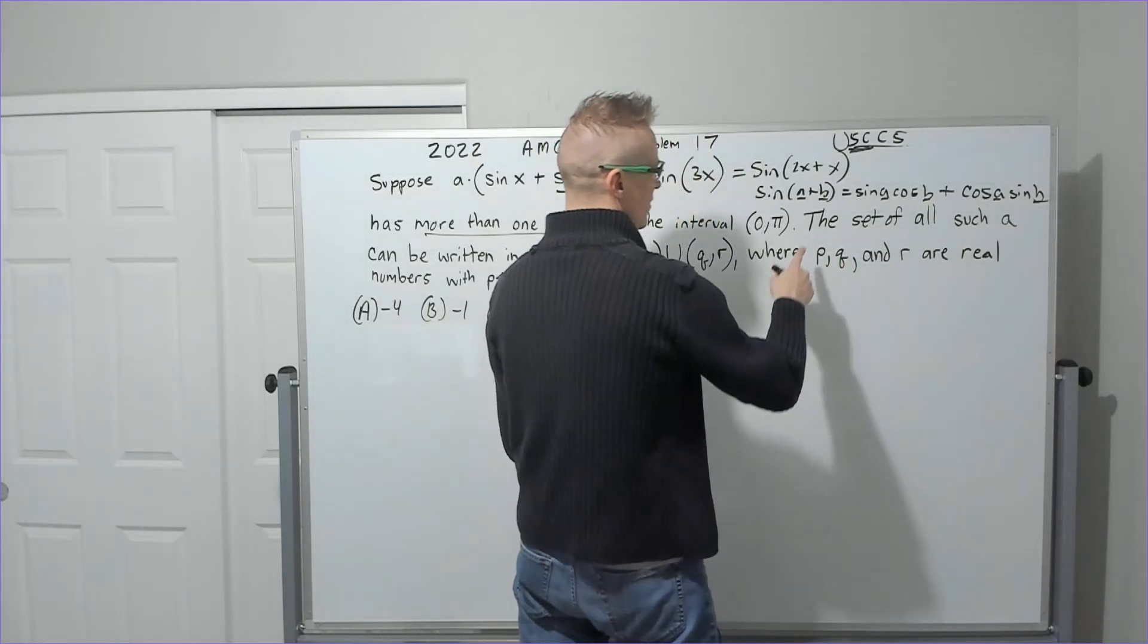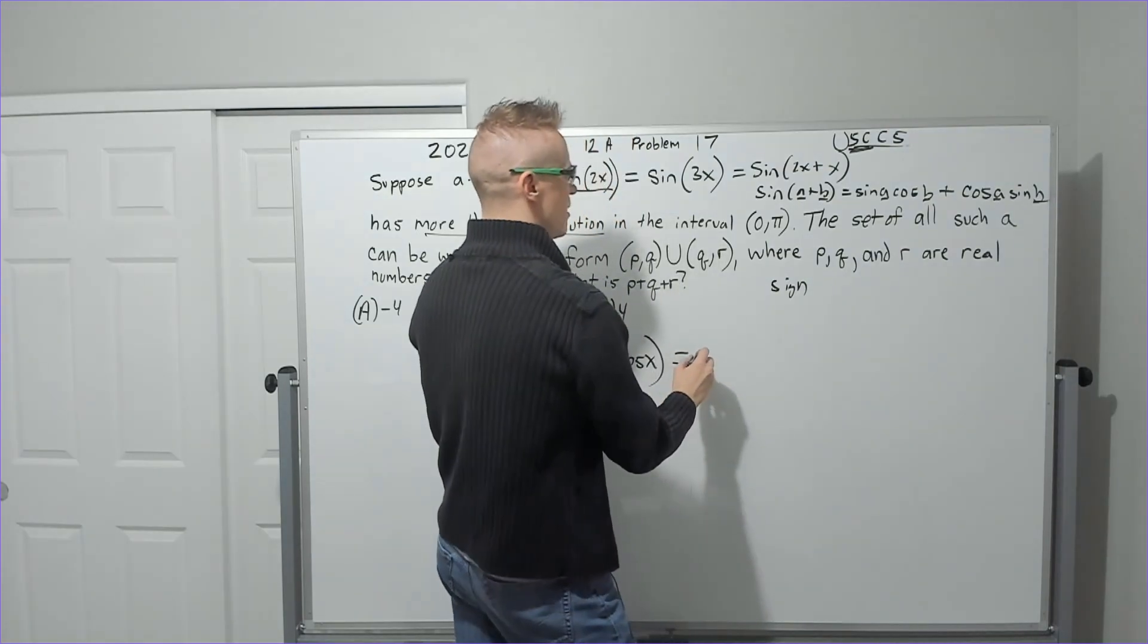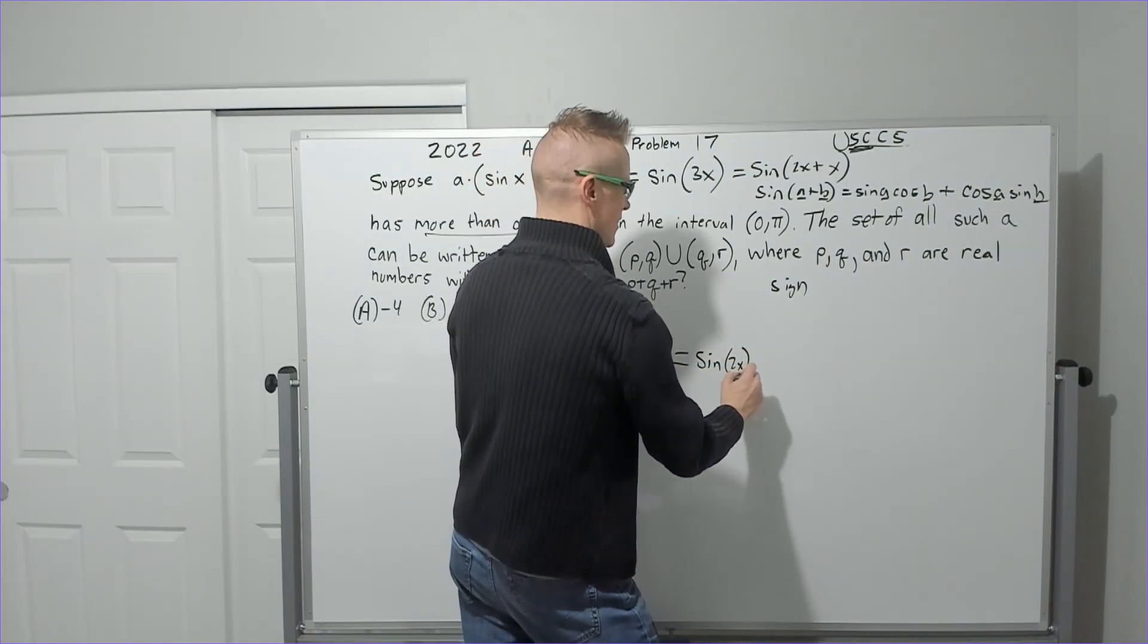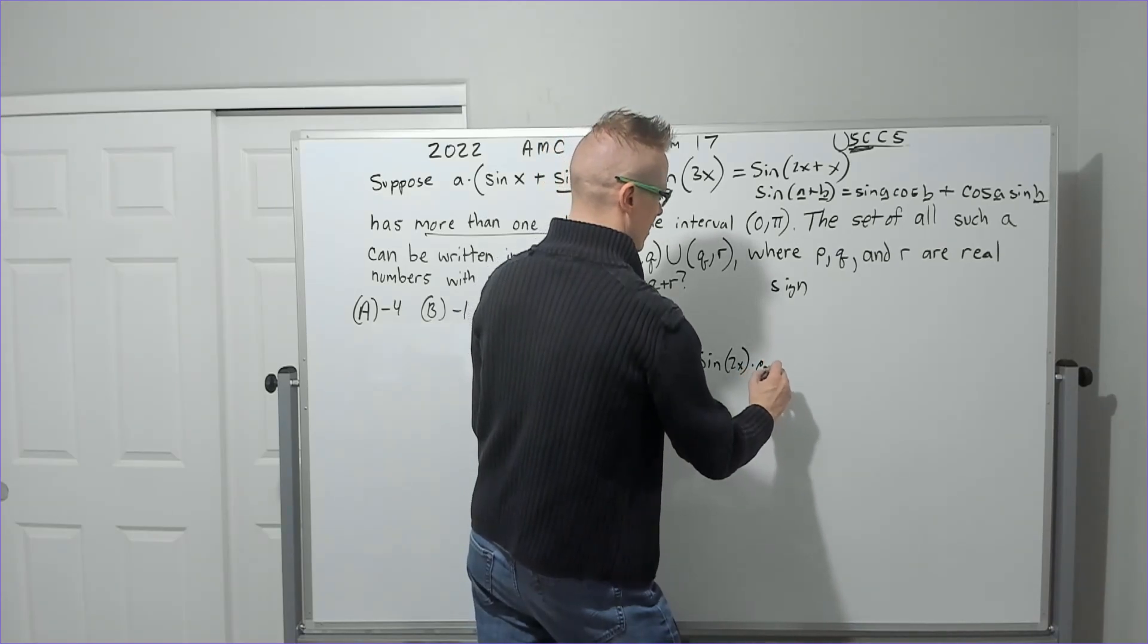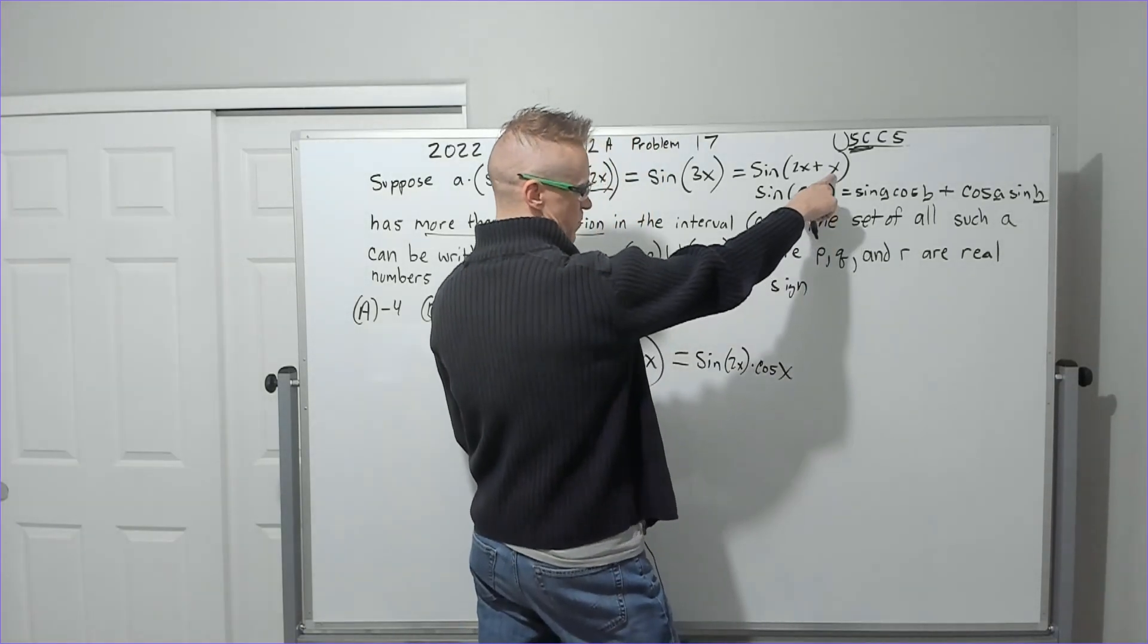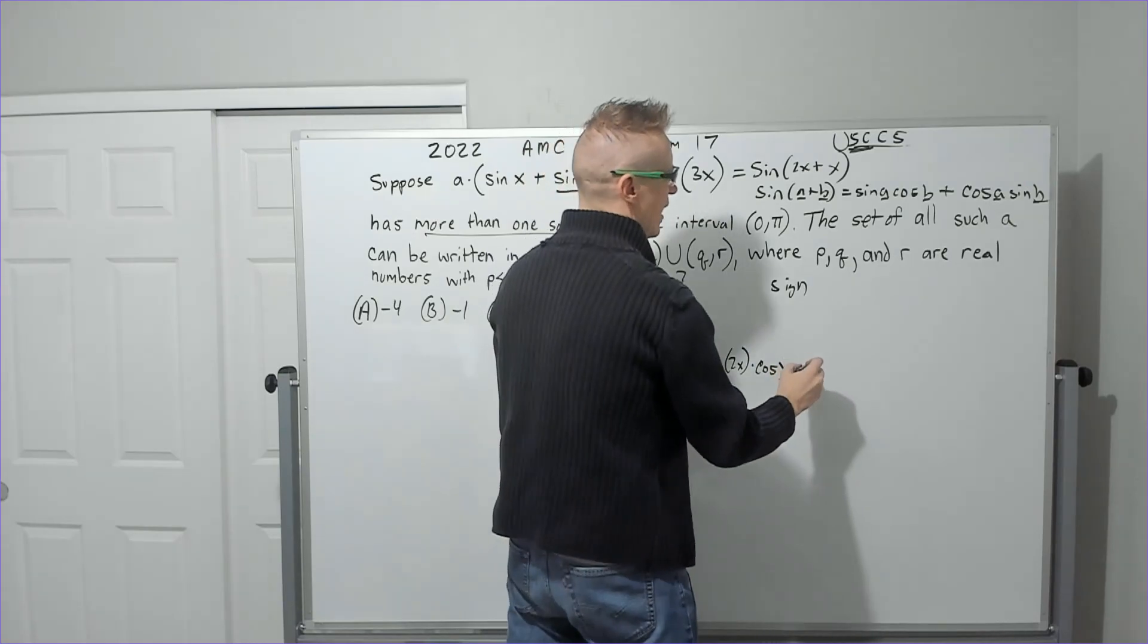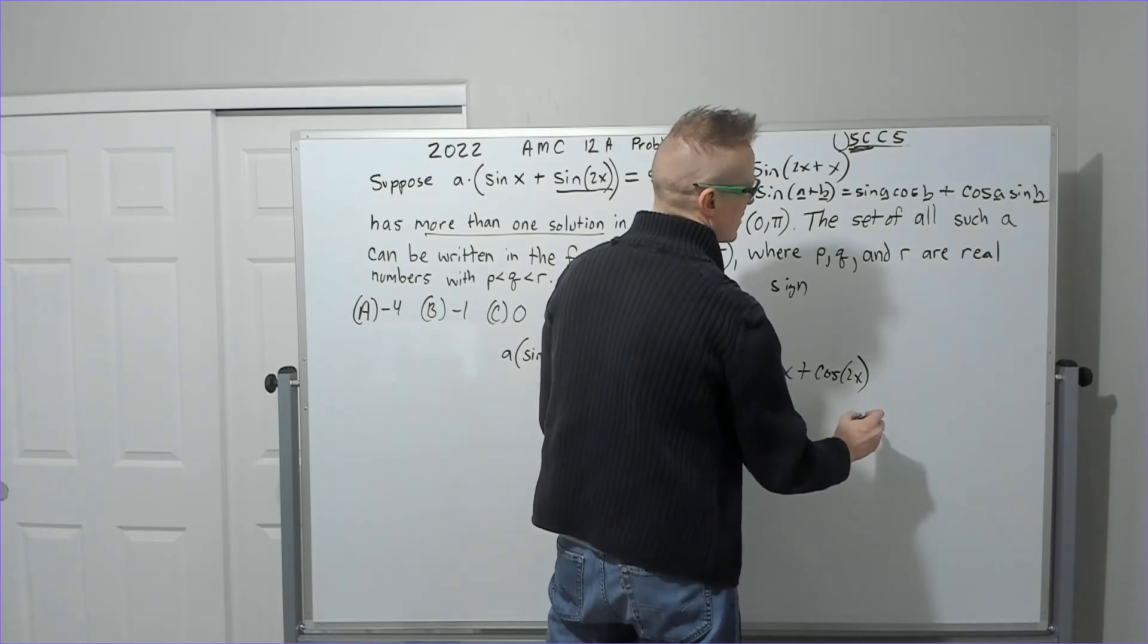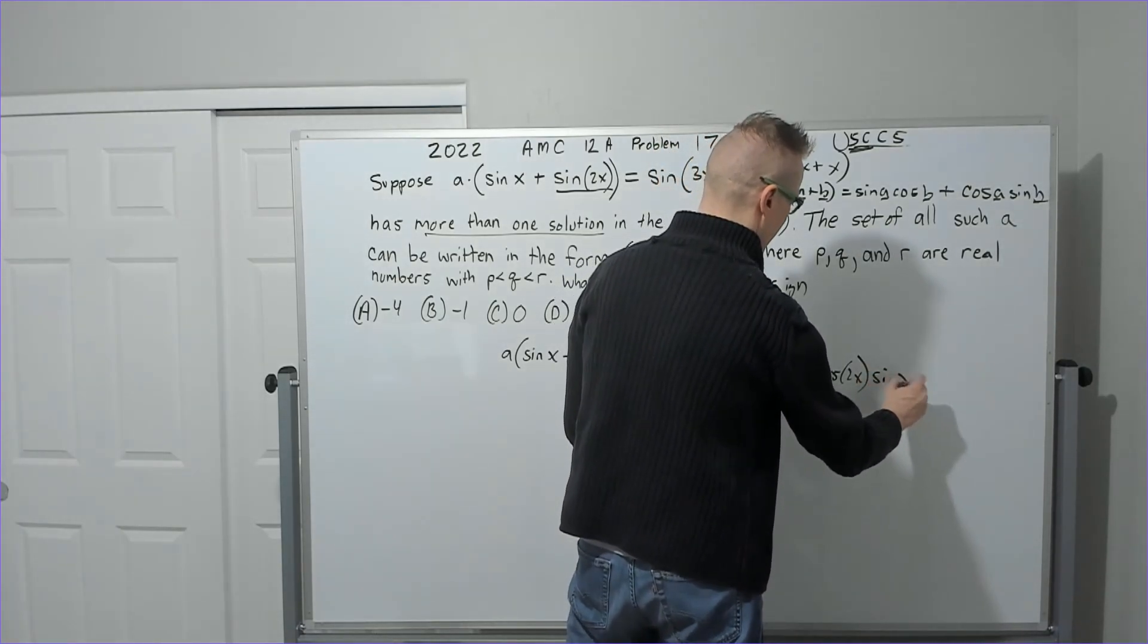So here then, my 2x is the A. So we're going to make this the sine of 2x times the cosine of x, because that's the B value. Okay.